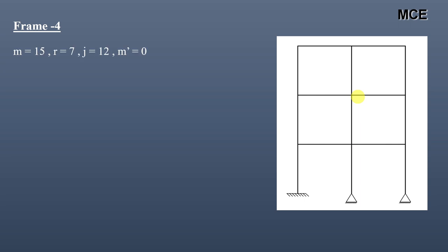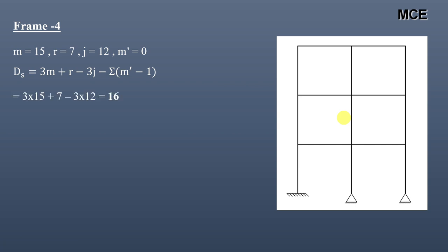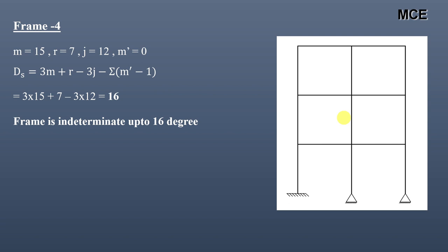For Frame 4, we can see it has 15 members, 7 reactions, 12 joints, and no internal hinge, so m′ = 0. The value of ds = 16, so this frame is indeterminate to 16 degrees. External indeterminacy = 7 − 3 = 4. Internal indeterminacy = 16 − 4 = 12.